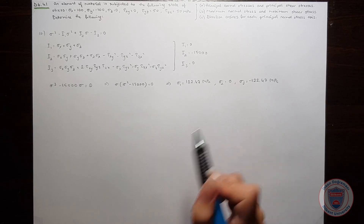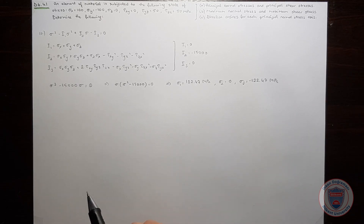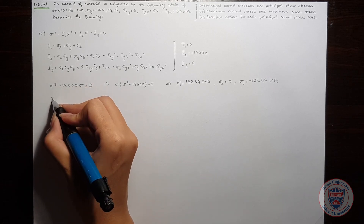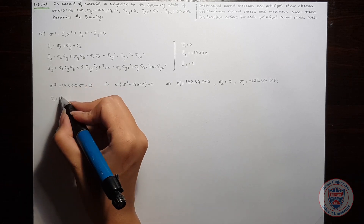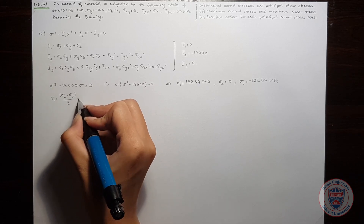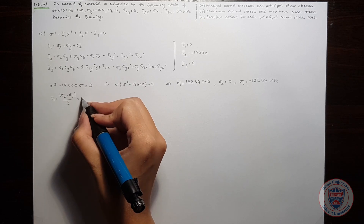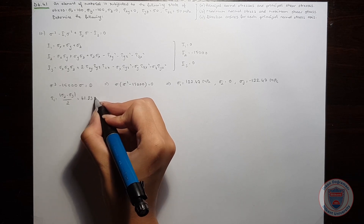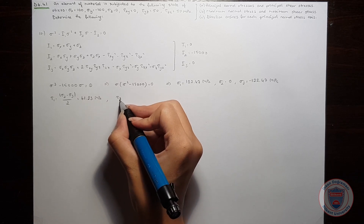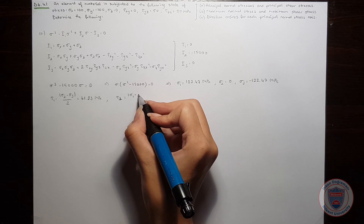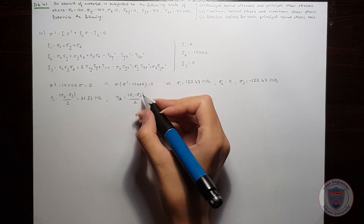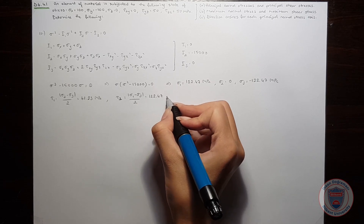Since we have found the principal normal stresses, we can now calculate the principal shear stresses. Tau_1 will be (sigma_2 minus sigma_3) over 2, which equals 61.23 MPa. Tau_2 will be (sigma_1 minus sigma_3) over 2, which is also equal to 61.23 MPa.